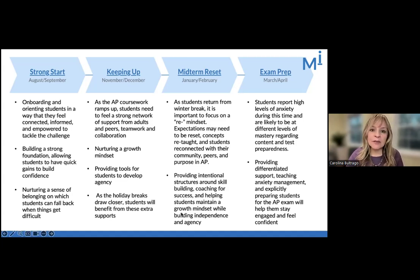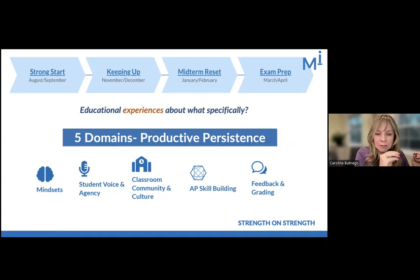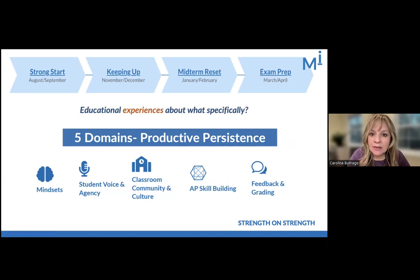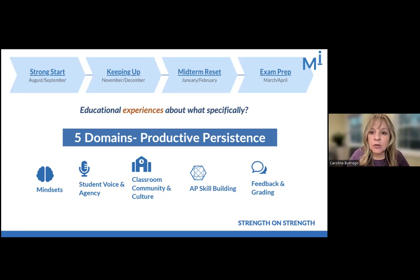These are the critical periods that the AP On-Track Framework delineates. For each critical period, the framework provides a description of experiences that educators can provide in the classroom that support productive persistence in students. We organize those experiences under five domains: Mindsets, Student Voice and Agency, Classroom Community and Culture, AP Skill Building, and Feedback and Grading Practices. Everything you will see in the AP On-Track Framework for each critical period is organized under those five domains.